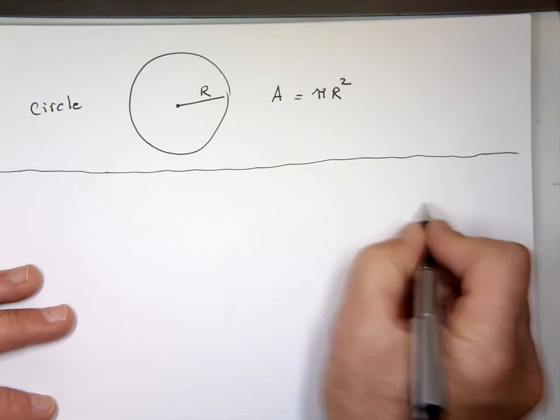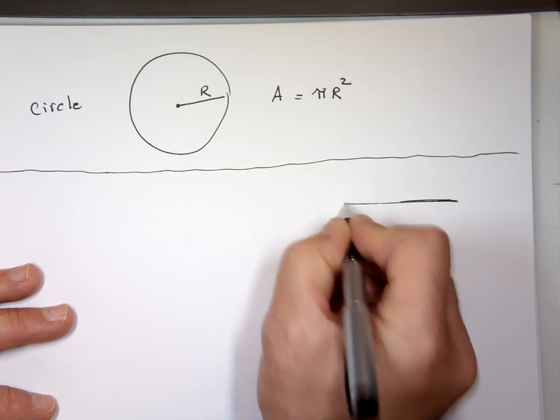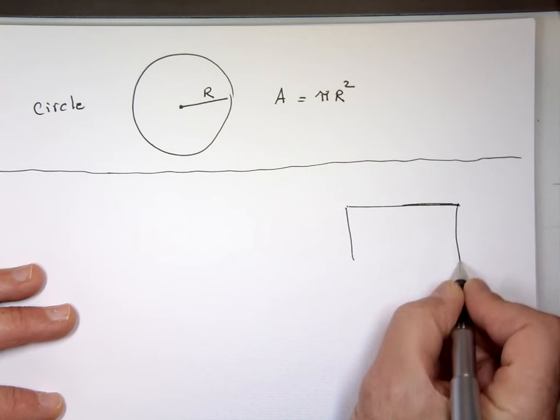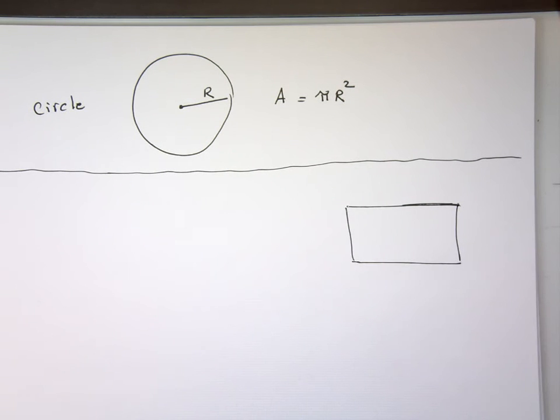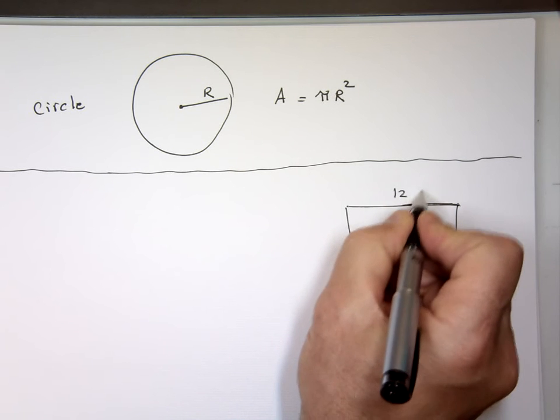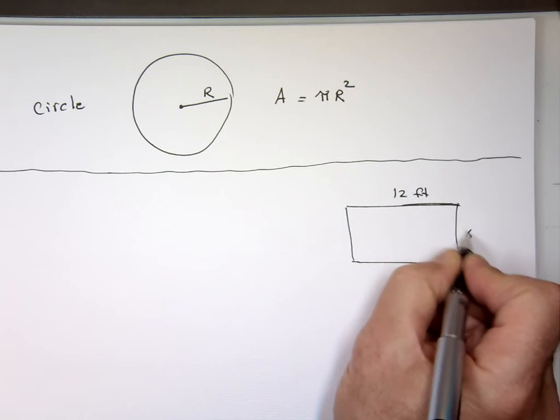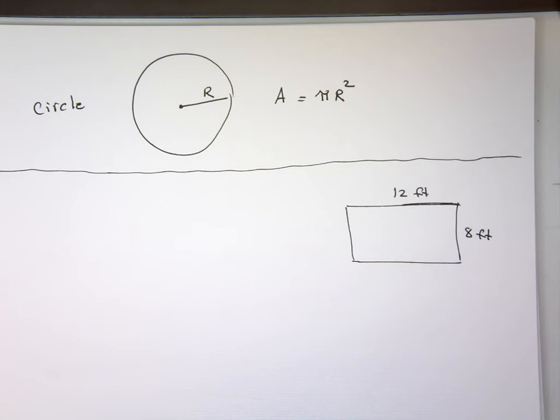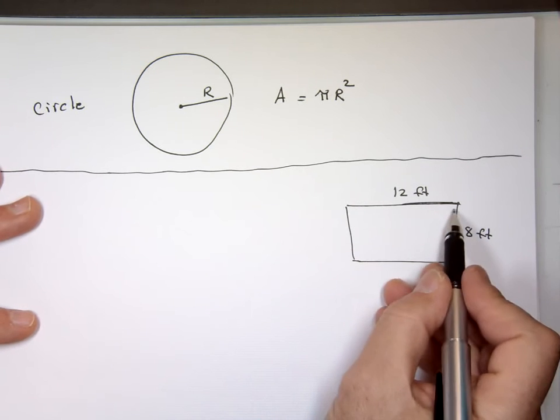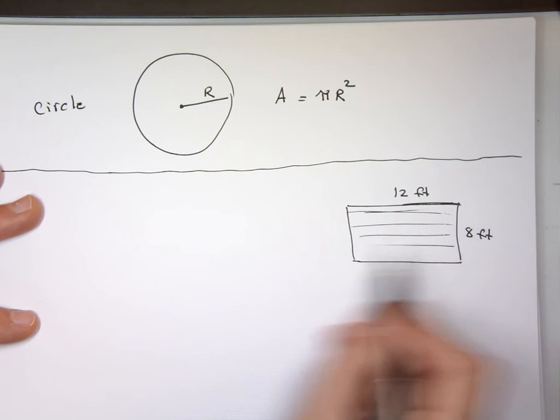Let's say you have a kitchen and you want to tile the kitchen. The kitchen happens to look like this, 12 feet long by 8 feet wide. You're going to go to Home Depot or Lowe's and buy these tiles, a foot by a foot that you peel the bottom and stick them to it. How many of these tiles you need to buy? The area actually covers the inside.